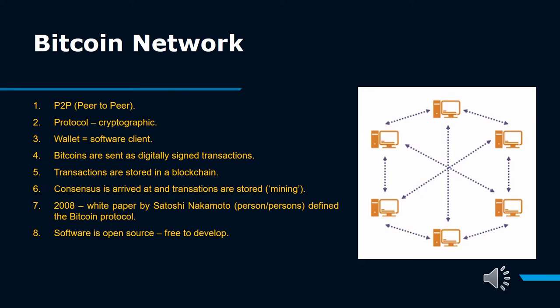First of all, to understand the Bitcoin network, we need to have good knowledge of networking. Bitcoin network is a peer-to-peer payment network that operates on a cryptographic protocol. Users send and receive Bitcoins, the units of currency, by broadcasting digitally signed messages to the network using Bitcoin cryptocurrency wallet software. Transactions are recorded into a distributed, replicated public database known as the blockchain, with consensus achieved by a proof-of-work system called mining.